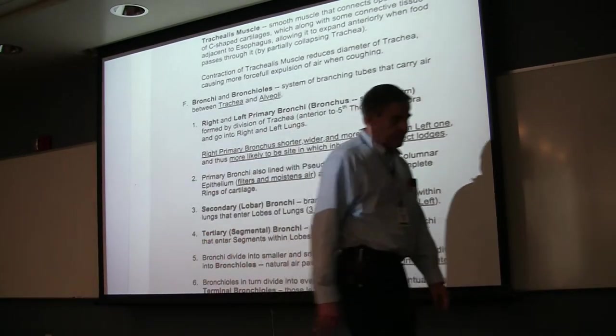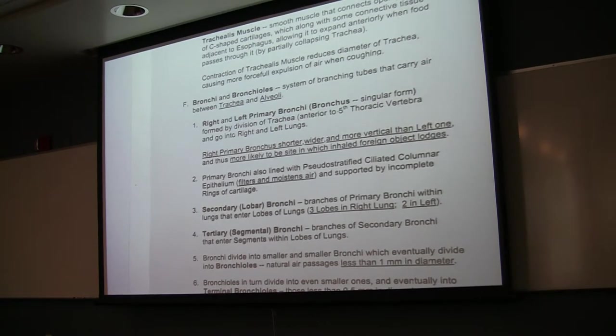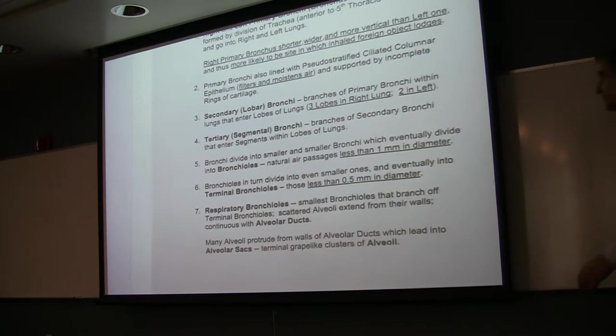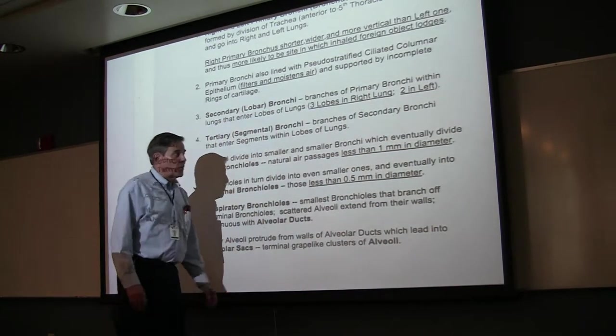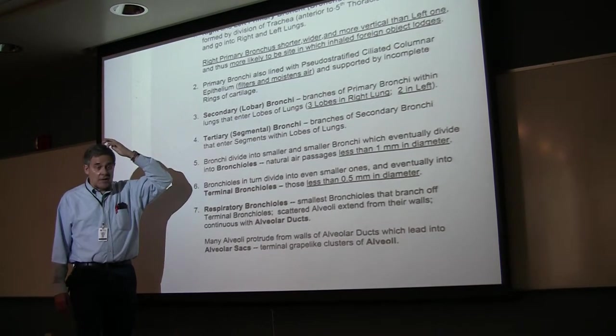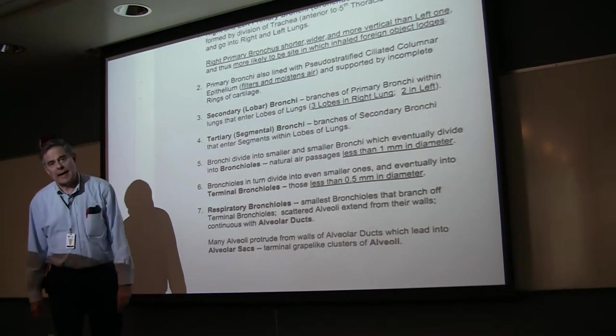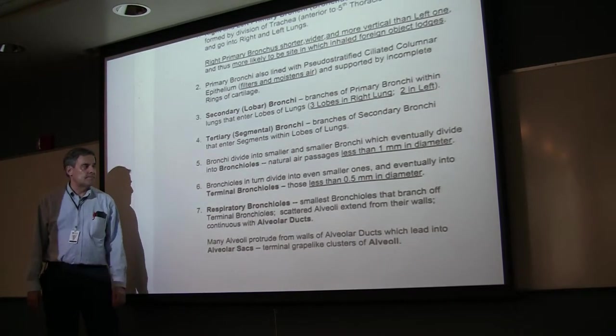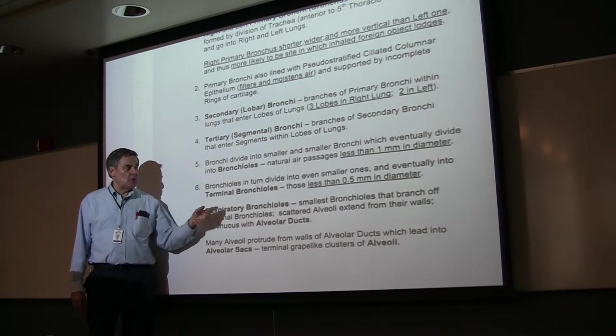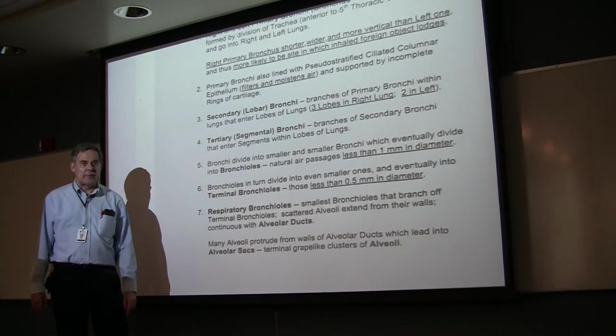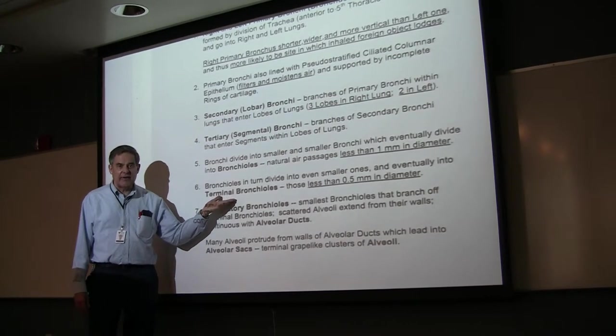These bronchi then divide into smaller and smaller bronchi. Eventually, the smaller bronchi divide into the bronchioles. The bronchioles are passageways usually a millimeter or less in diameter. The bronchioles, in turn, divide into smaller ones which are the terminal bronchioles. They're usually about a half a millimeter or less in diameter. They're so called because that's the end of the conduction zone.